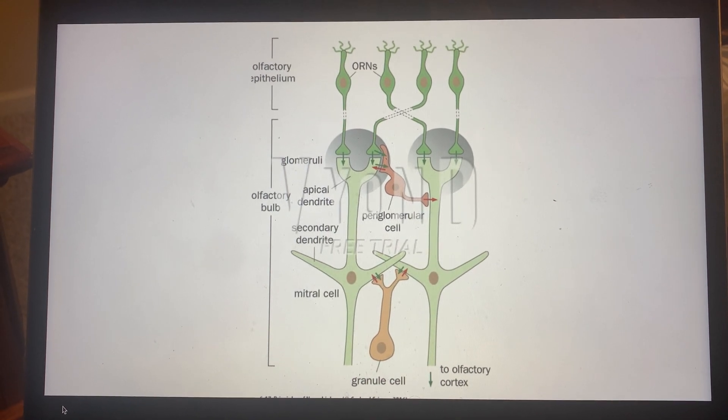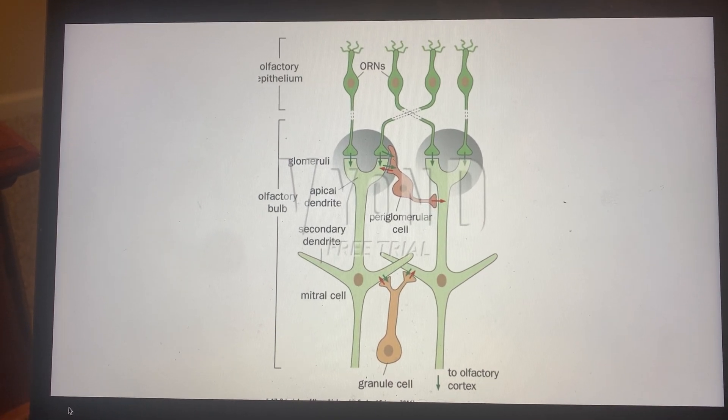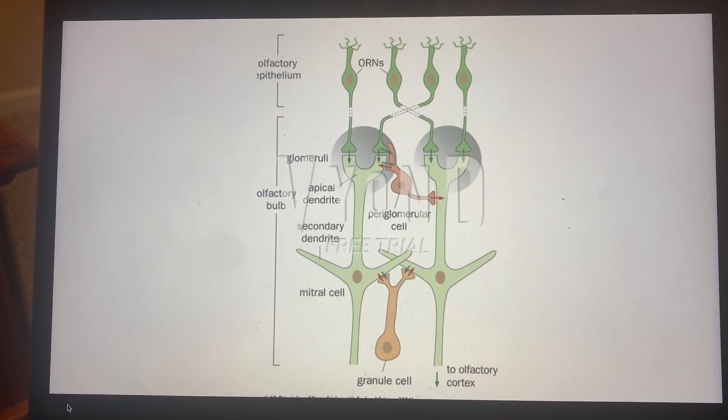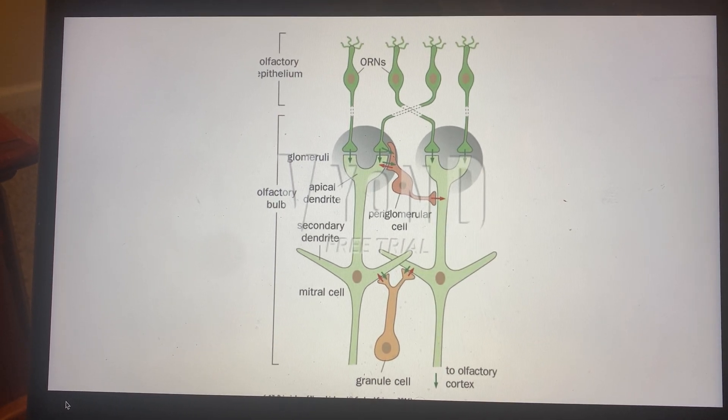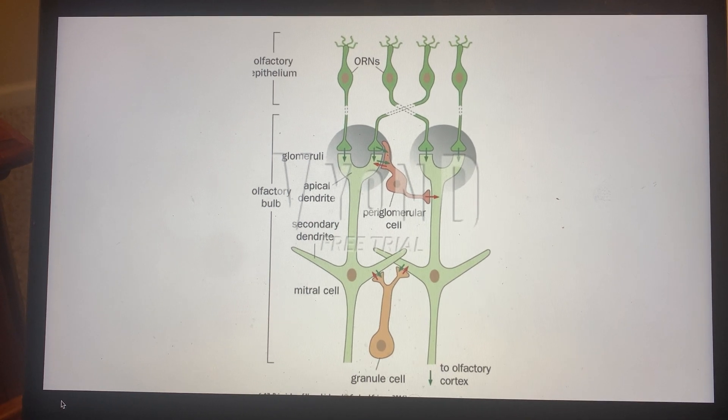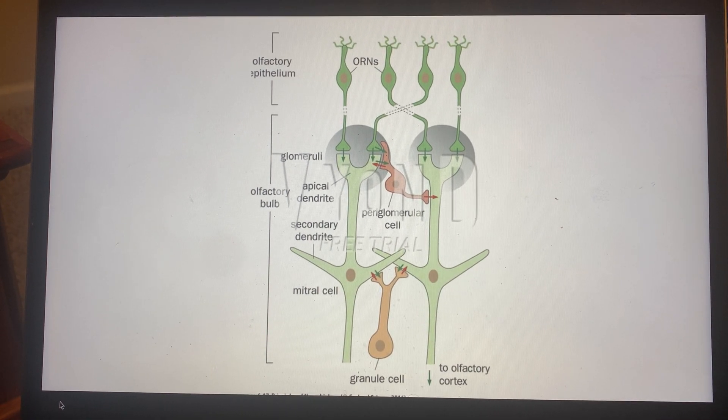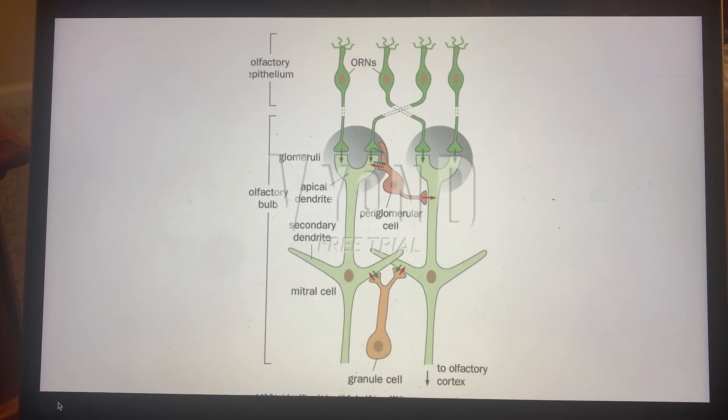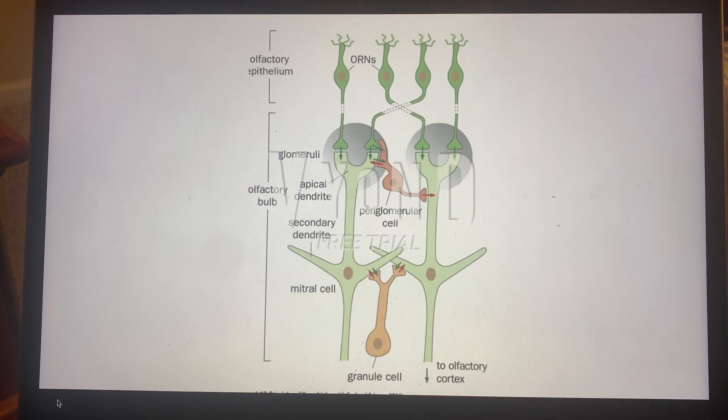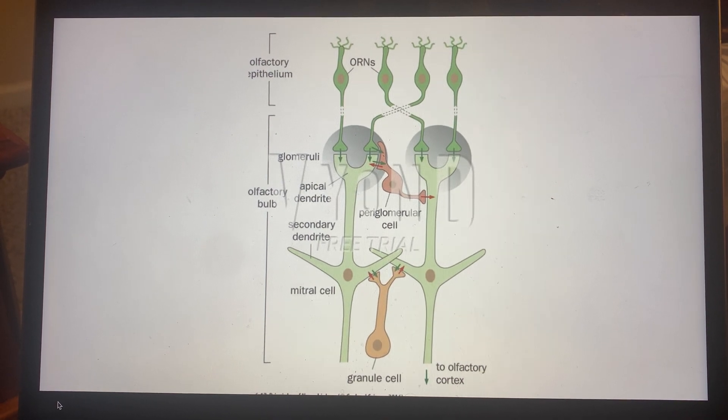For an example, let's say you are in the wild and you smell a predator. Since the predator is really far away, you only have a very small sense of the predator. As you get closer to the predator, the smell will continue to increase, and this increase can be attributed to lateral inhibition.